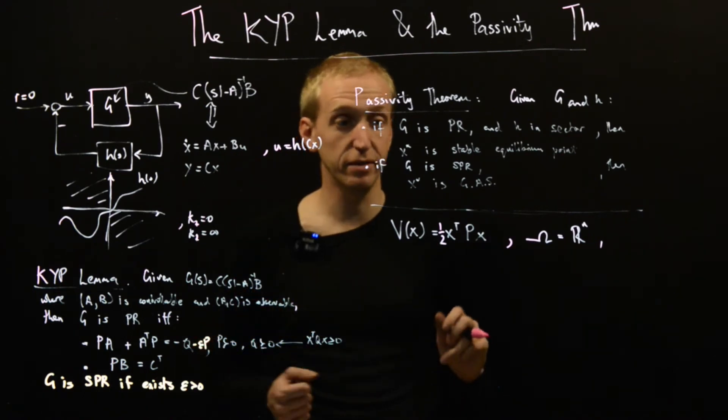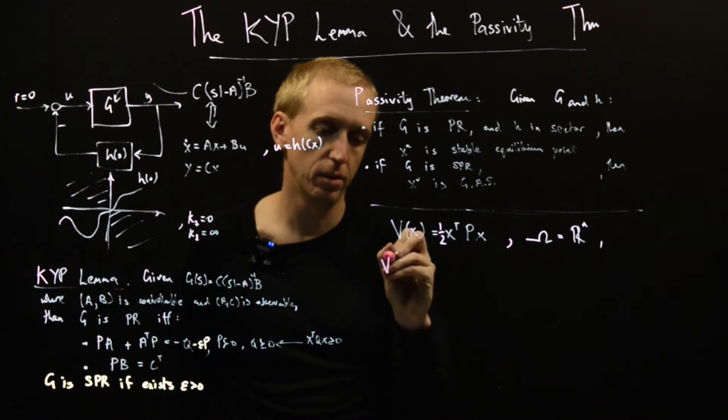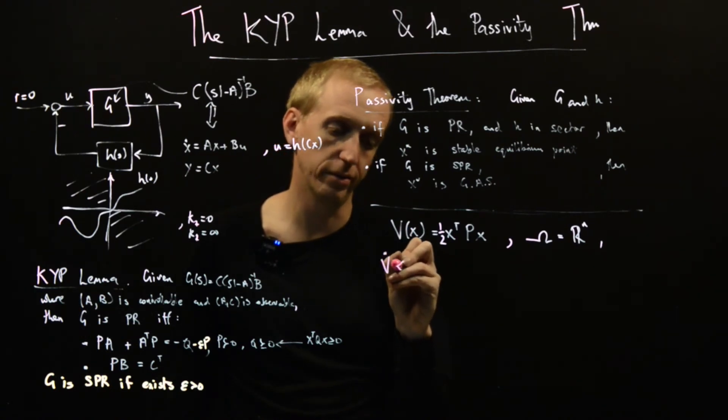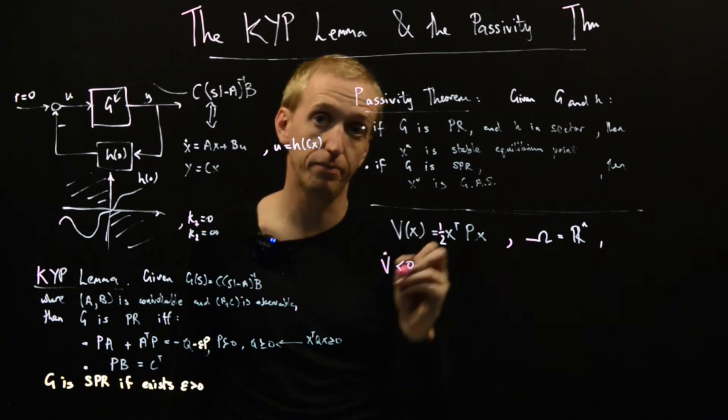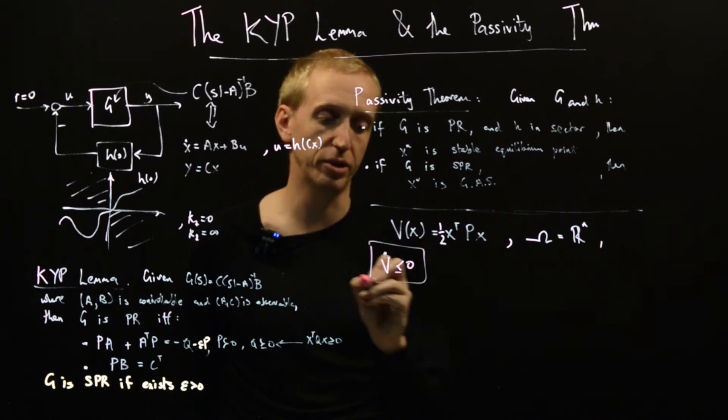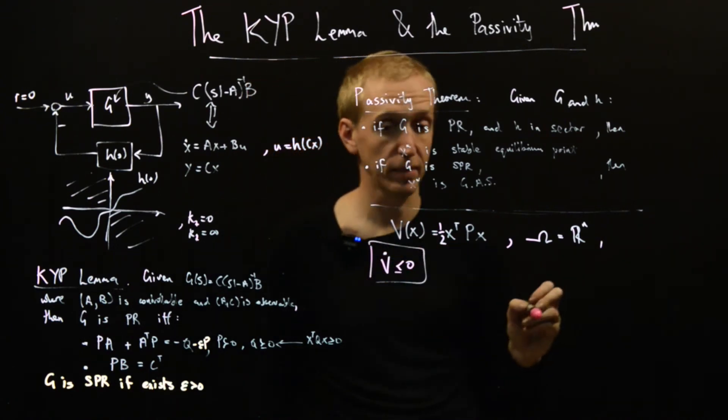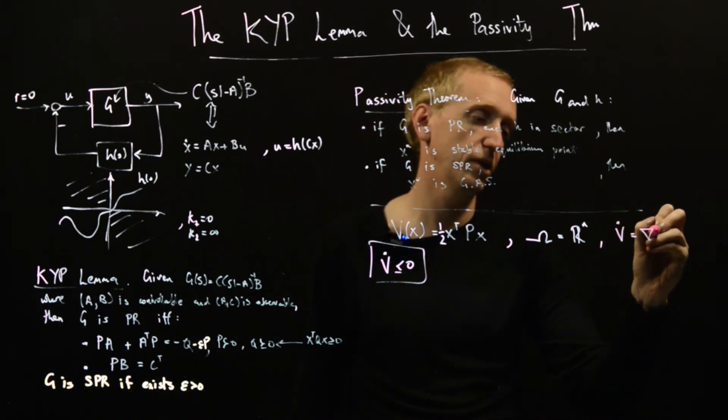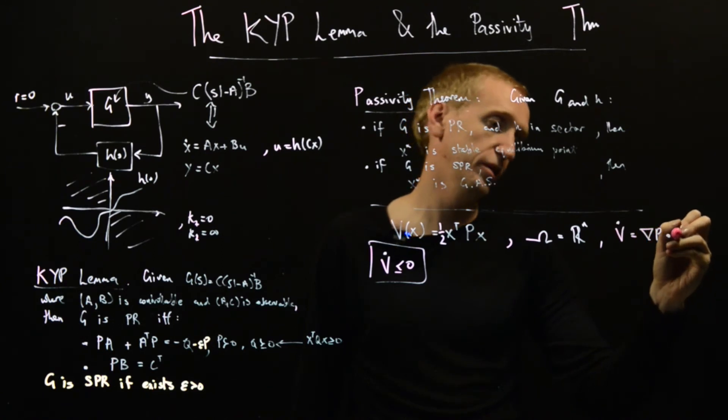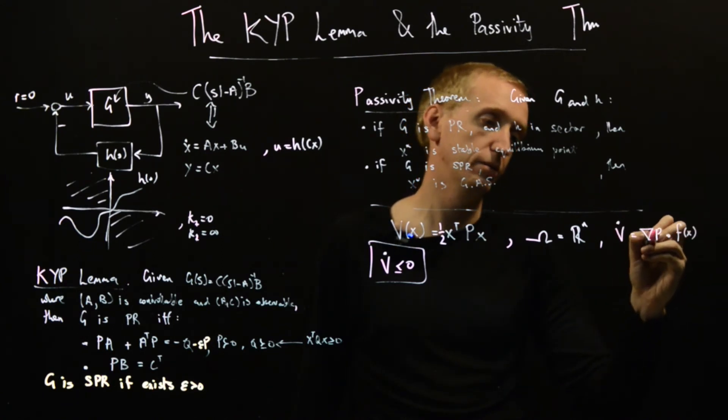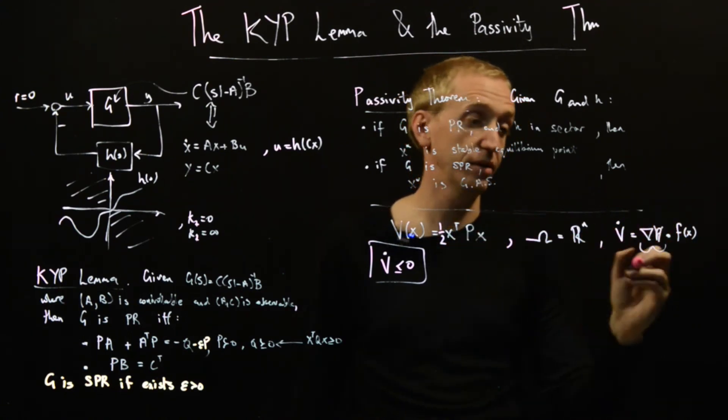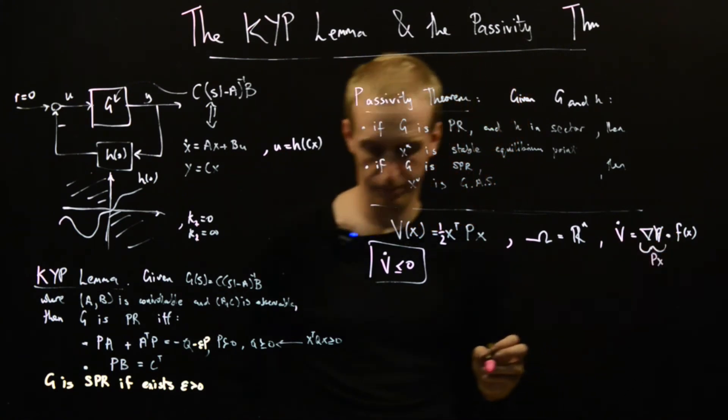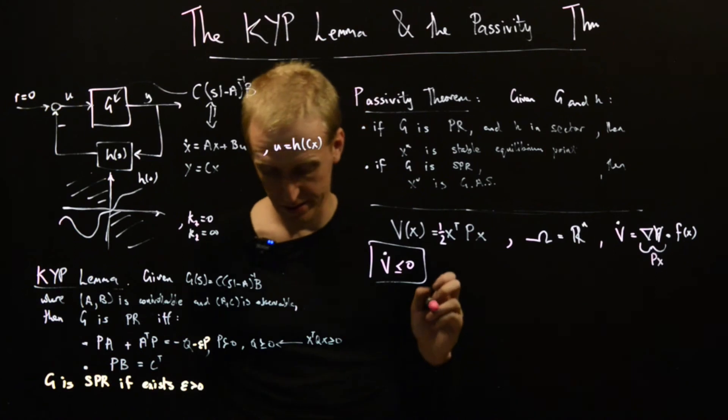Similarly, we need V to be positive everywhere else, and that's guaranteed because P here is positive definite. So all that remains is that we've got to prove that V dot is strictly less than zero for asymptotic stability or less than or equal to zero for stability. To do that, we need to find V dot. We just remind ourselves that V dot equals grad V dotted with the dynamics. When we differentiate this expression, this is just equal to P x. Now we just plug things in and start going.